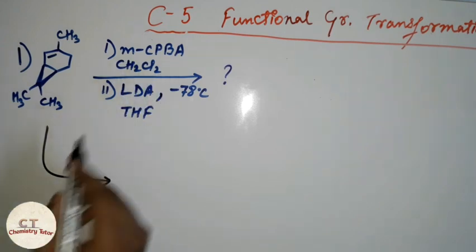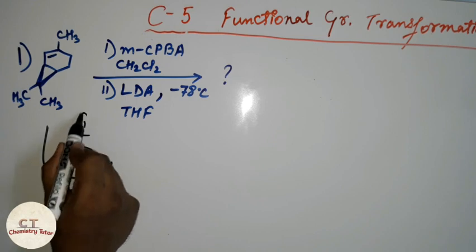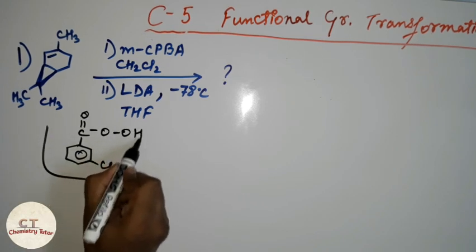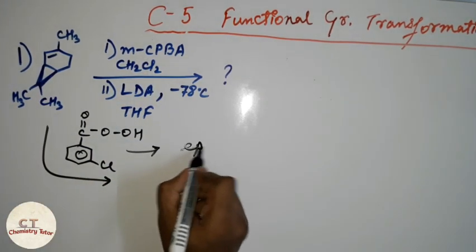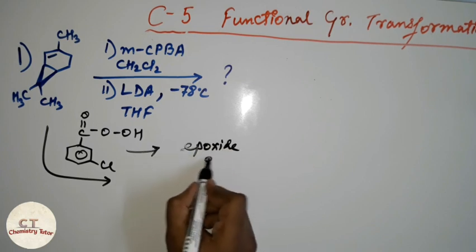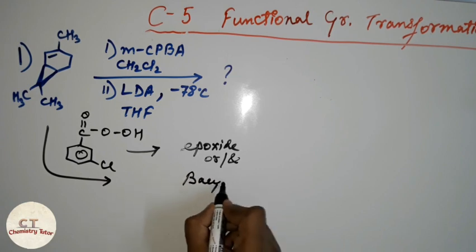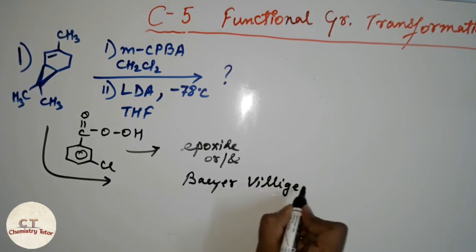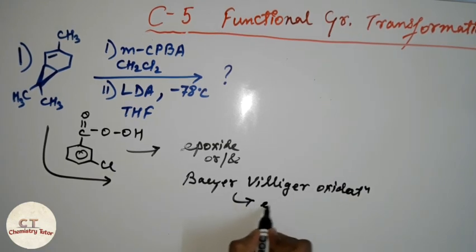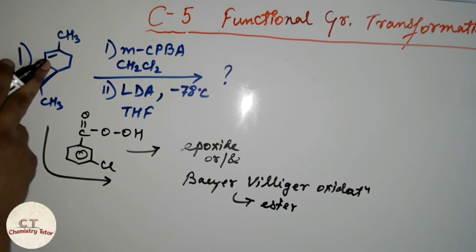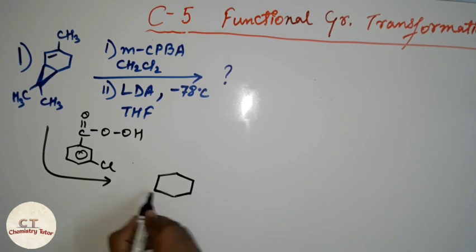What is MCPBA? It is meta-chloroperoxybenzoic acid. What is its function? It can form an epoxide, and it can also undergo Baeyer-Villiger oxidation to give an ester. In this case, a double bond is present, so it will give us an epoxide.